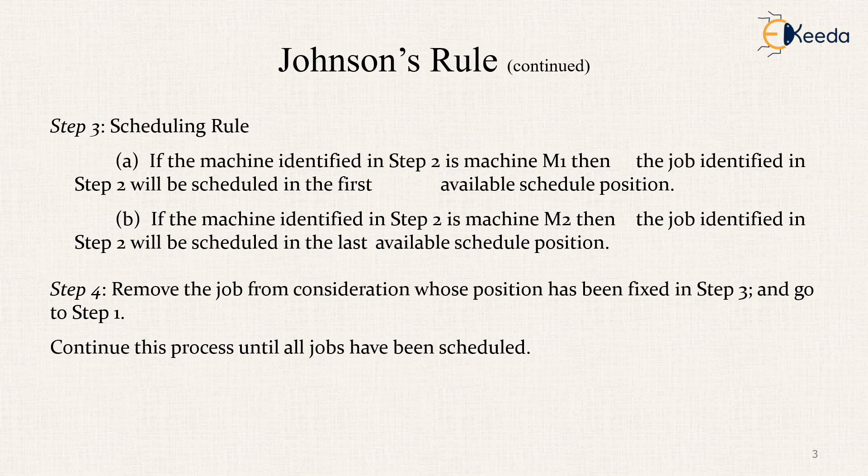Then we find out the scheduling rule which states that if a machine is identified in step 2 is machine M1, then the job identified in step 2 will be scheduled in the first available schedule position. Next is if the machine is identified in step 2 is machine M2, then the job identified in step 2 will be scheduled in the last available schedule position.